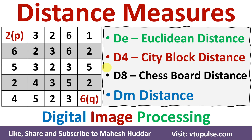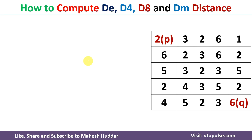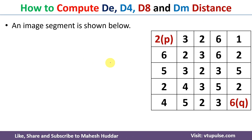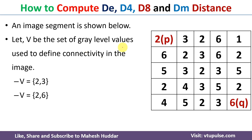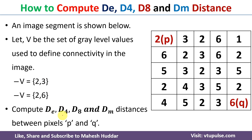Welcome back. In this video I will discuss, given a segment of image, how to find the different distance measures like DE, D4, D8, and DM in digital image processing. This is the segment of image given to us, along with a set of gray level values used to define the connectivity in the image. V is equal to {2,3} and V is equal to {2,6} are also given. Given these two things, we need to compute DE, D4, D8, and DM between the two pixels p and q.